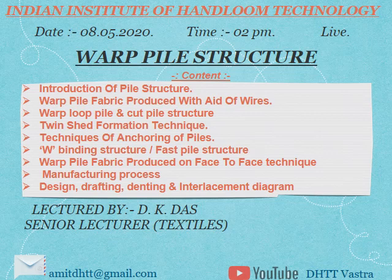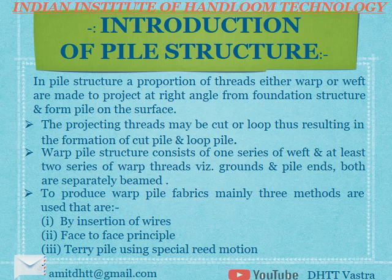Today's topic is warp pile structure, covering the introduction of pile structures, warp pile fabrics produced with the aid of wires, loop pile and cord pile structures, insertion formation techniques, anchoring of piles, W-windings, warp pile produced on face-to-face technique, and its manufacturing process, design draft, denting, and interlacement diagram. In a pile structure, a proportion of threads — either warp or weft — are made to project at right angles from the foundation structure and form pile on the surface.